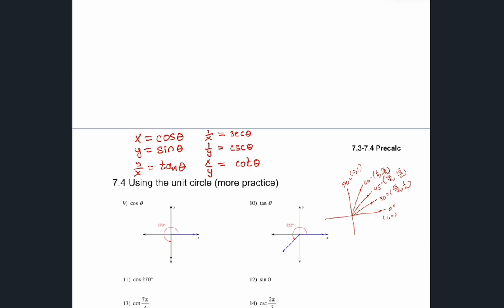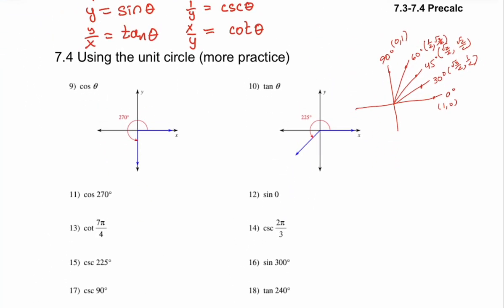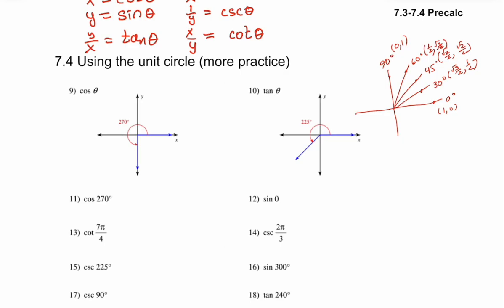Let's look at problems 9 and 10. Problem 9 asks for cosine of 270°. The point at 270° is (0, -1). Cosine is just the x-value at that point, which is 0. That's all there is to it.